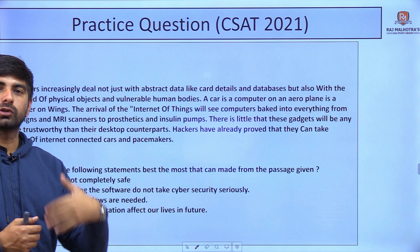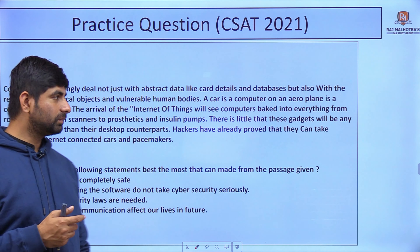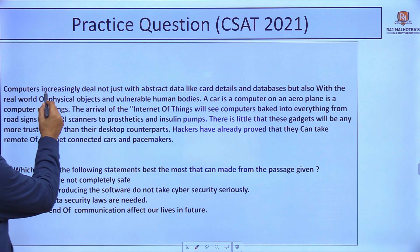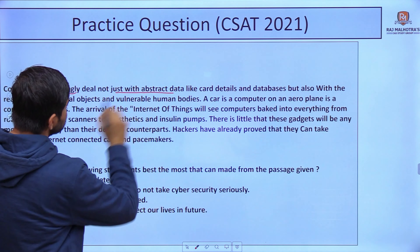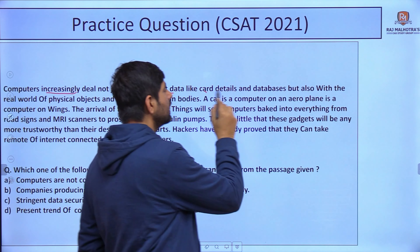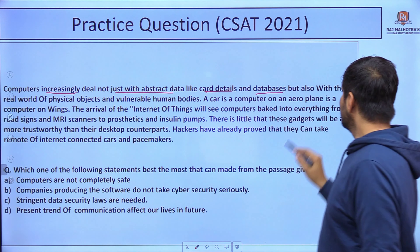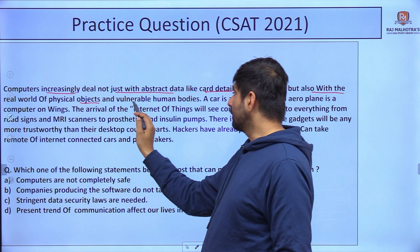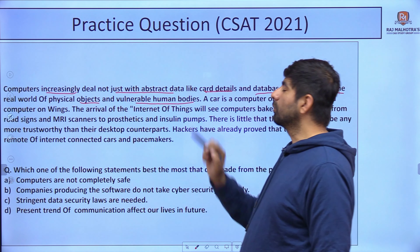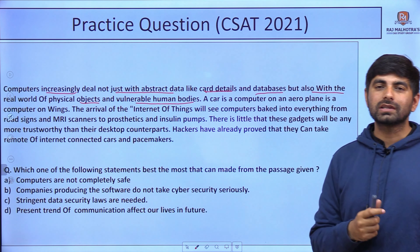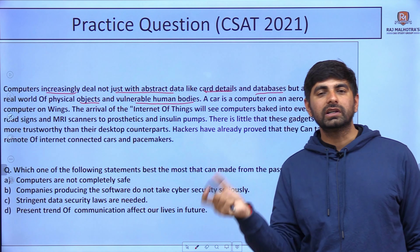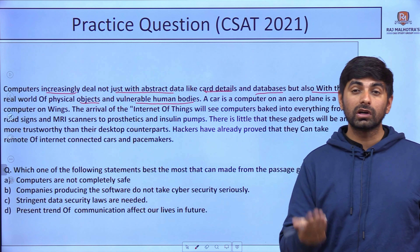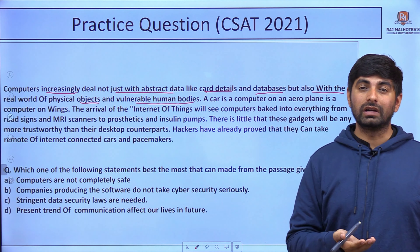If we have a passage, we will have a better understanding. The passage states: computers increasingly deal not just with abstract data like card details and databases, but also with the real world of physical objects and vulnerable human bodies. They are saying that computers manage not just credit card details and databases but also the real world of physical objects.